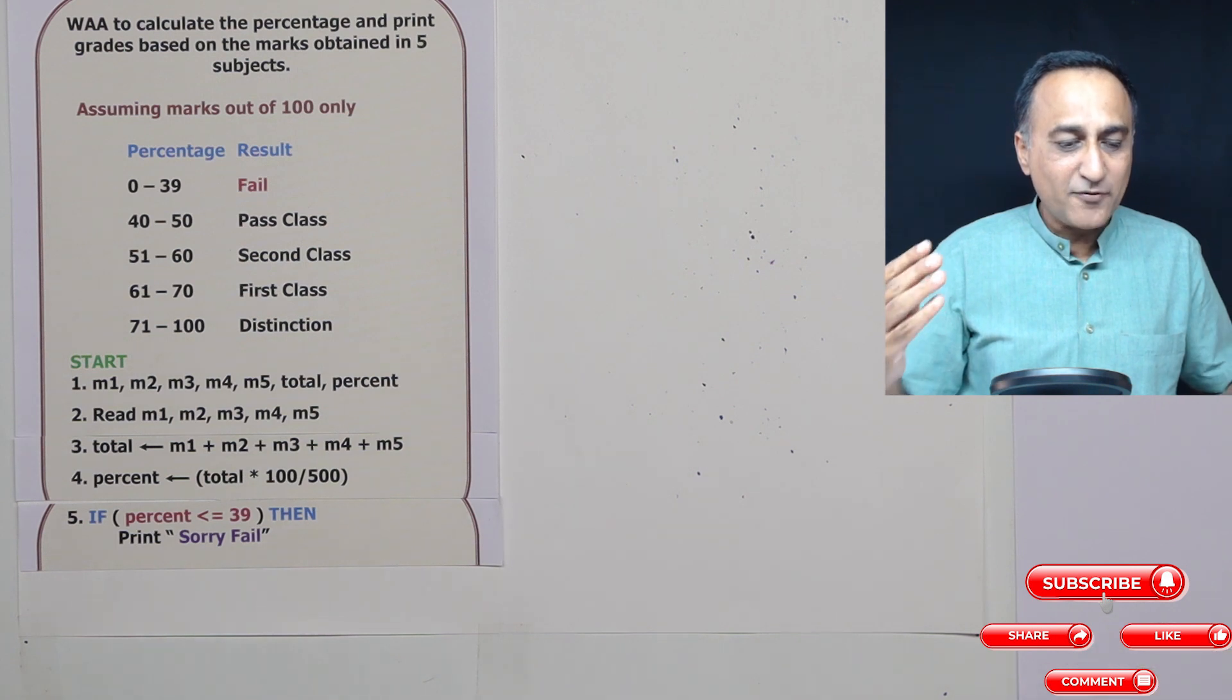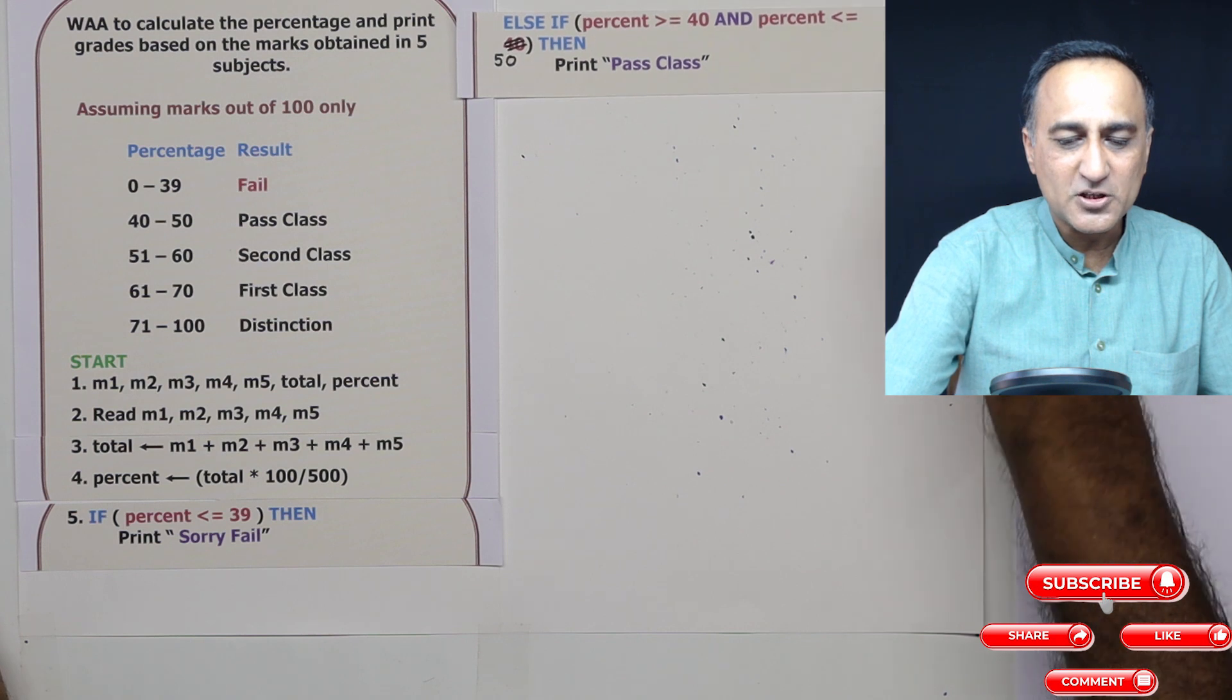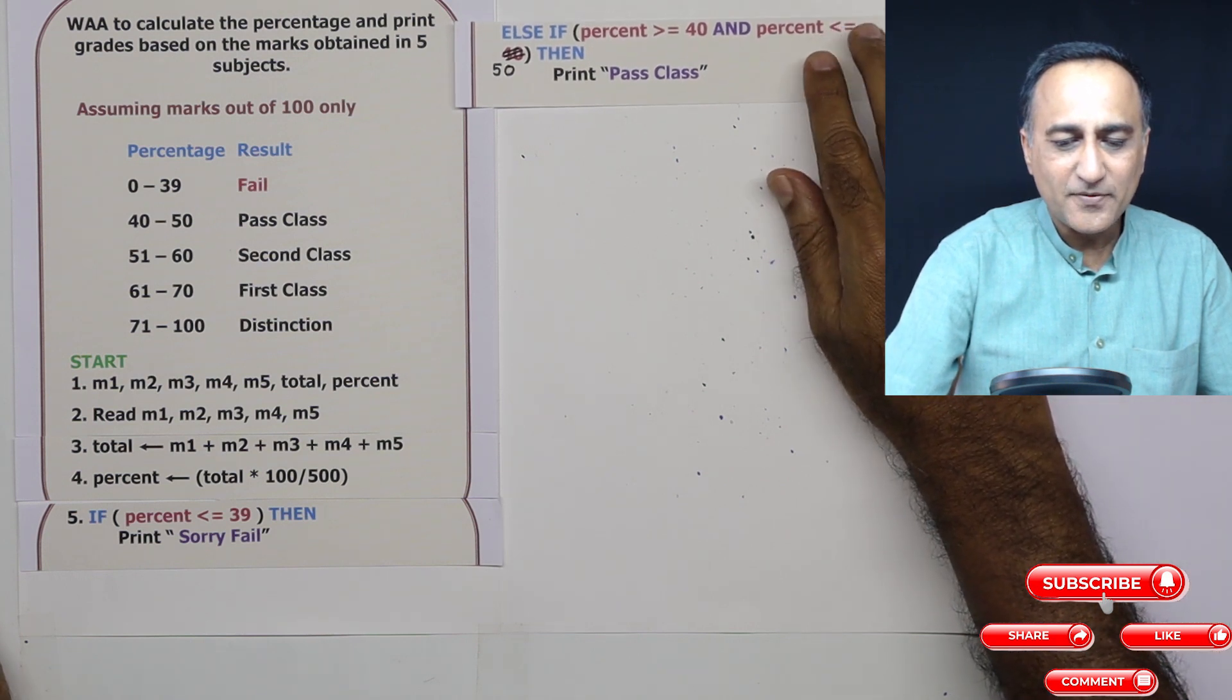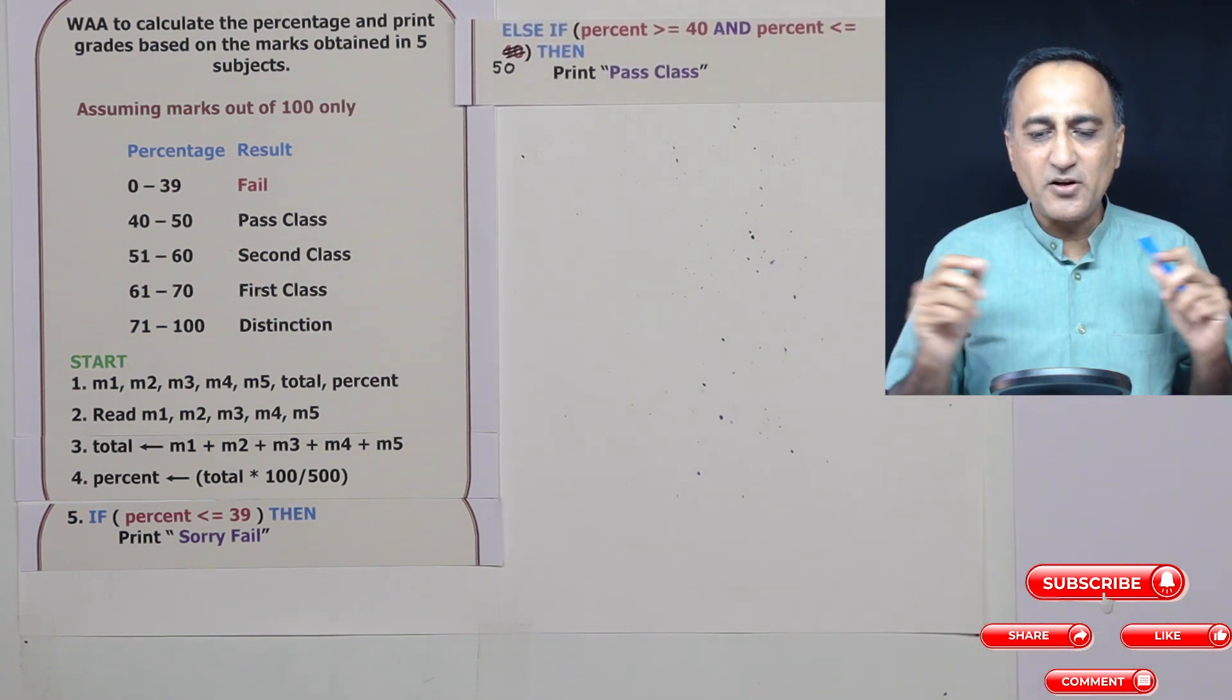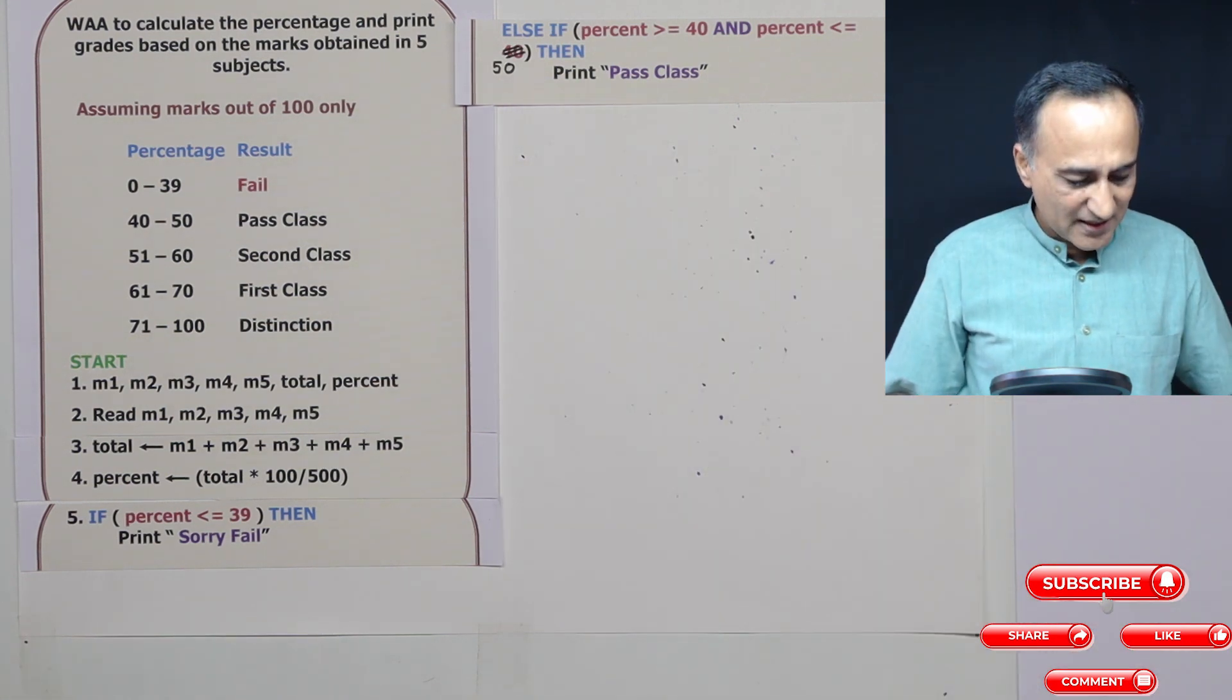Other possibilities are there are still four more possibilities. So I am going to use the else if condition. So else if the percent is greater than or equal to 40 and less than or equal to 70, then we are going to print first class.